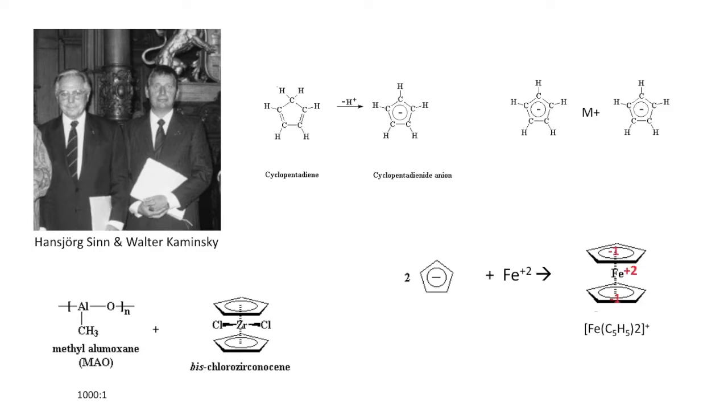Another example is the metal zirconium sandwiched with cyclopentadienyl anions. However, since zirconium has a charge of +4 and the anions only have a -1 each, to balance the charge, the zirconium bonds with 2 chloride ions, with a -1 charge on each, to give a neutral compound, giving a bis-chlorozirconocene, also known as zirconocene dichloride.